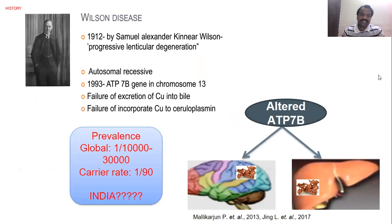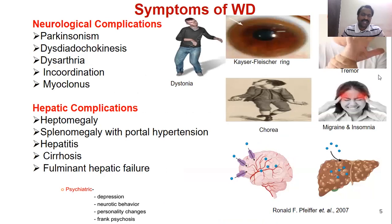Wilson disease is an autosomal recessive disorder. It was first identified in 1912 by Samuel Wilson. In 1993, the gene responsible for Wilson disease was assigned — that is ATP7B. The global prevalence of Wilson disease is 1 in 10,000 to 1 in 13,000, and the carrier rate is 1 in 90. Unfortunately, in India, we don't have prevalence data yet.